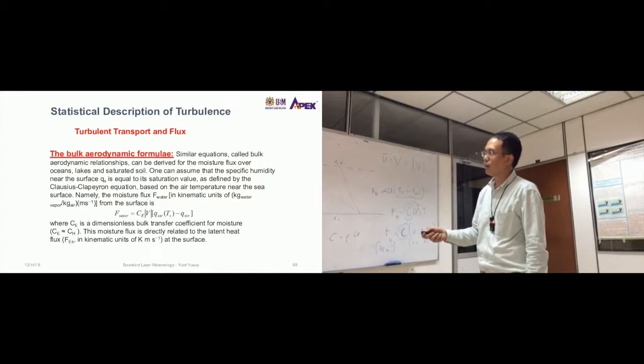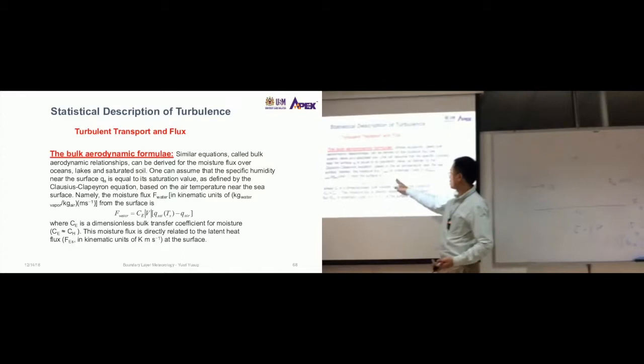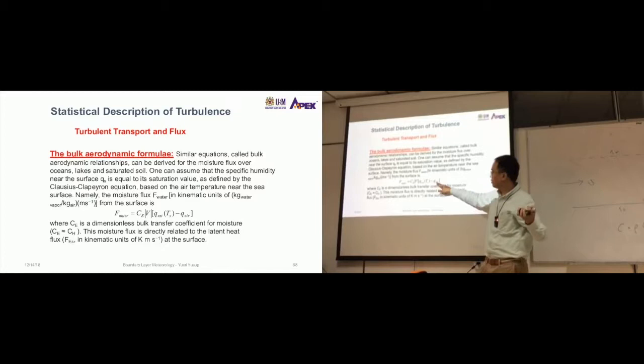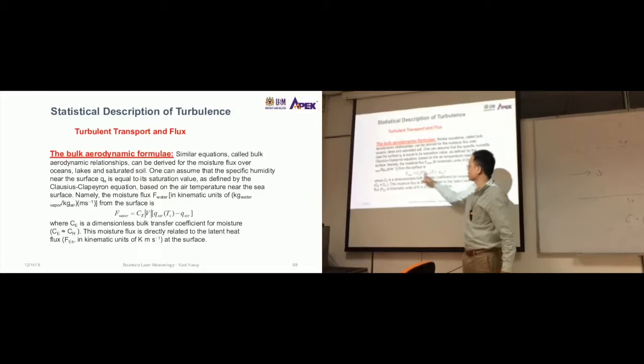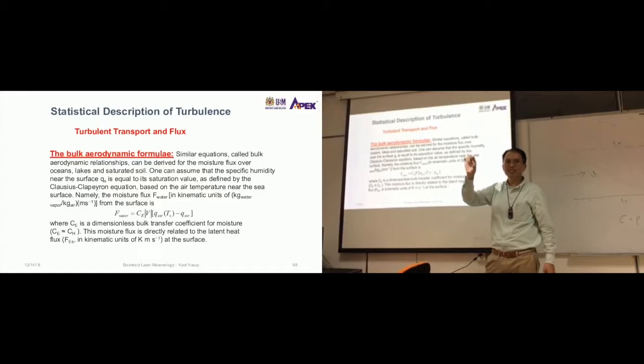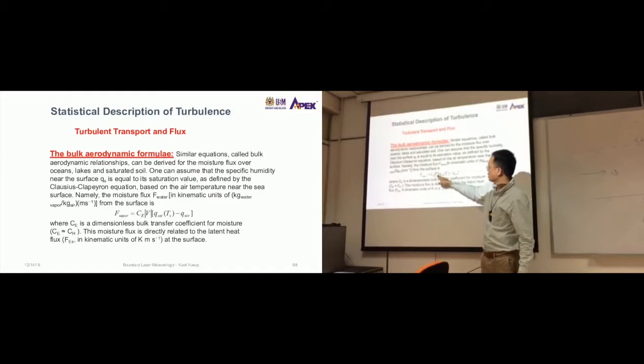So we use this Clausius-Clapeyron equation, but this is over water surfaces. Based on air temperature near the sea surface, namely the moisture flux in kinematic units—kilogram water per kilogram air—is this. So going through this equation here, this is the humidity of air above the surface of the water, maybe about 10 meters above, or 4 meters, 5 meters above. And here is the calculated moisture in the air quite close to the surface. We can use Clausius-Clapeyron equation to calculate this. I don't want to go into Clausius-Clapeyron, but it's quite easy. You just know the temperature, you plug in the value, then you get the value for the humidity. This is wind speed, and this is a constant. Calculate that, you get this.